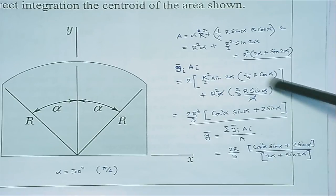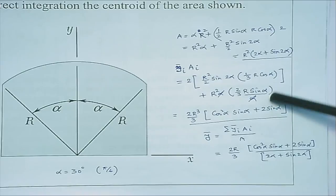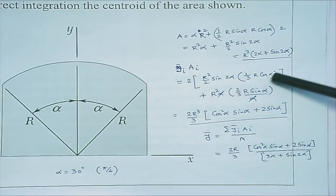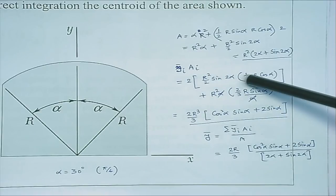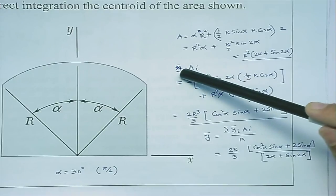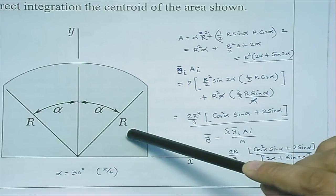I have this portion right here that is coming from the circular sector and then also from the triangle I have this part. So 2 times of the centroid multiplied by the area: y1 a1, let's say y2 a2.